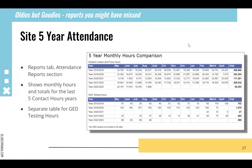A few other reports I want to highlight are what we call oldies but goodies — reports particularly useful now that you seem to be coming out of the worst of COVID. One is the site five-year attendance report. When you run it, it shows all your attendance month by month for the last five years — no matter what date you run it, it just looks back five years. This is particularly interesting right now because you can see how much you're building back month by month and compare it to three years ago — the year before COVID.